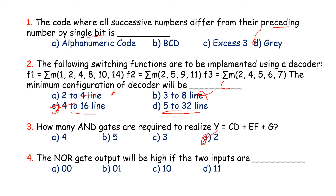The fourth question: the NAND gate output will be high if the two inputs are — if inputs are 0,1 or 1,0 or 1,1, the output is low. If any input is low, the output is high. The correct option will be 0,0.